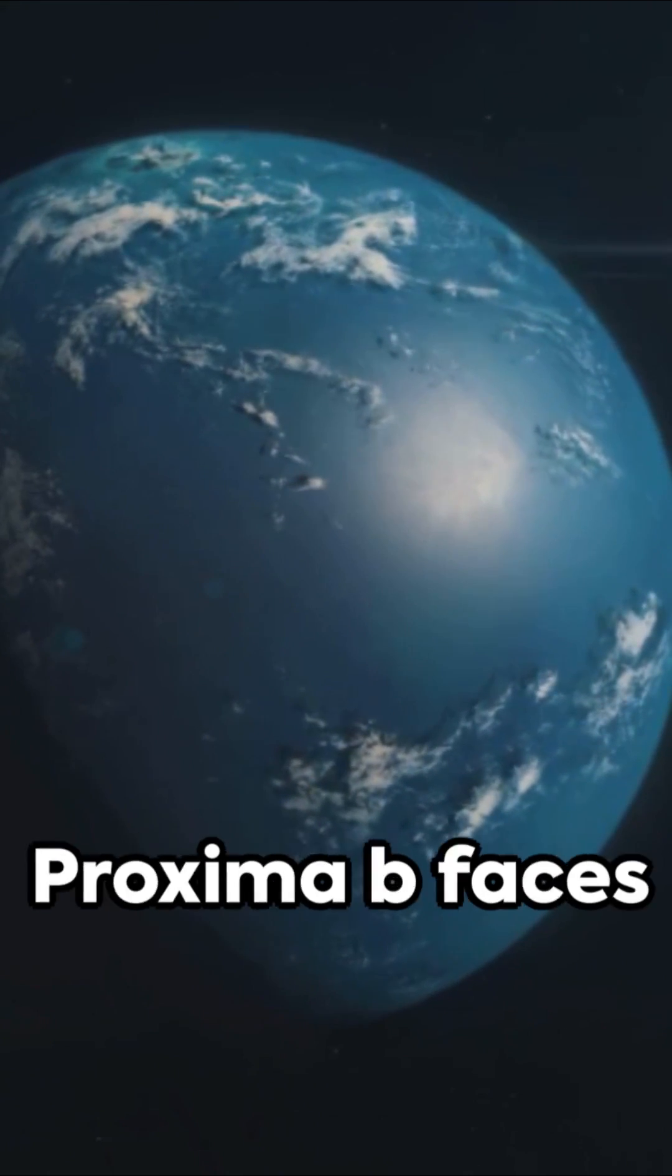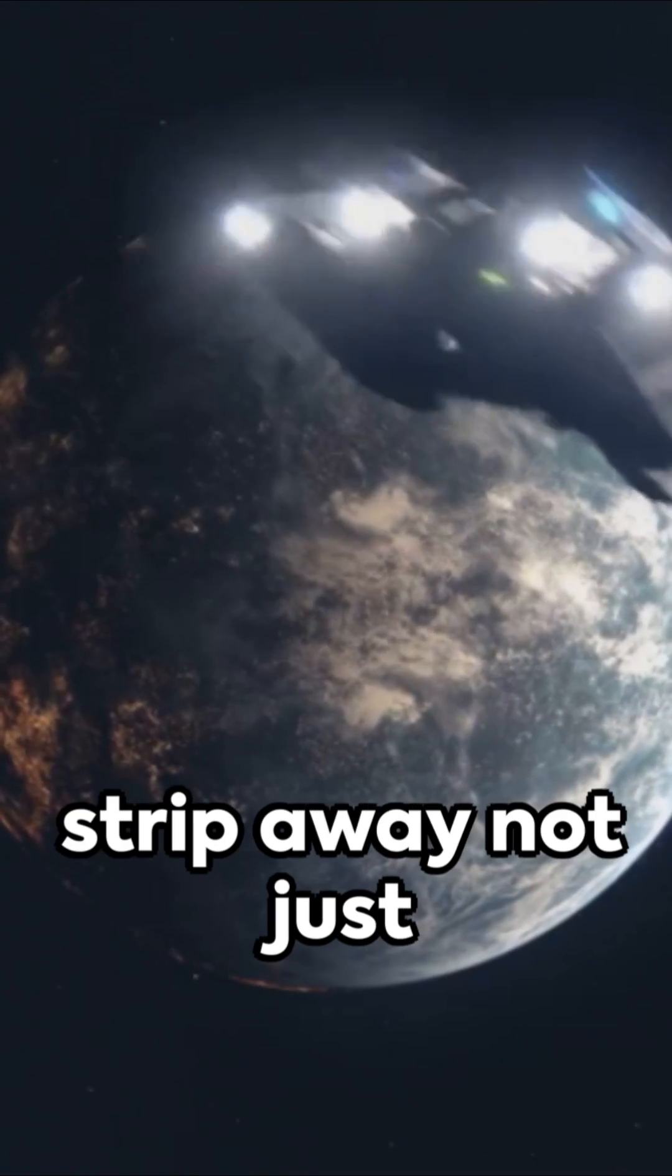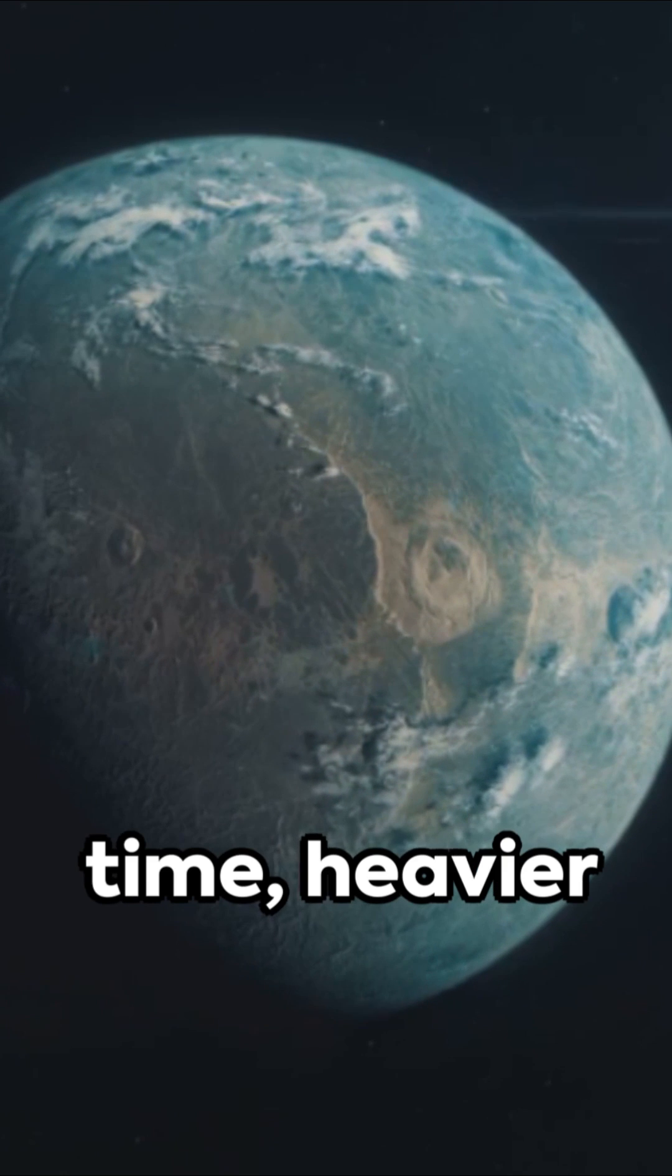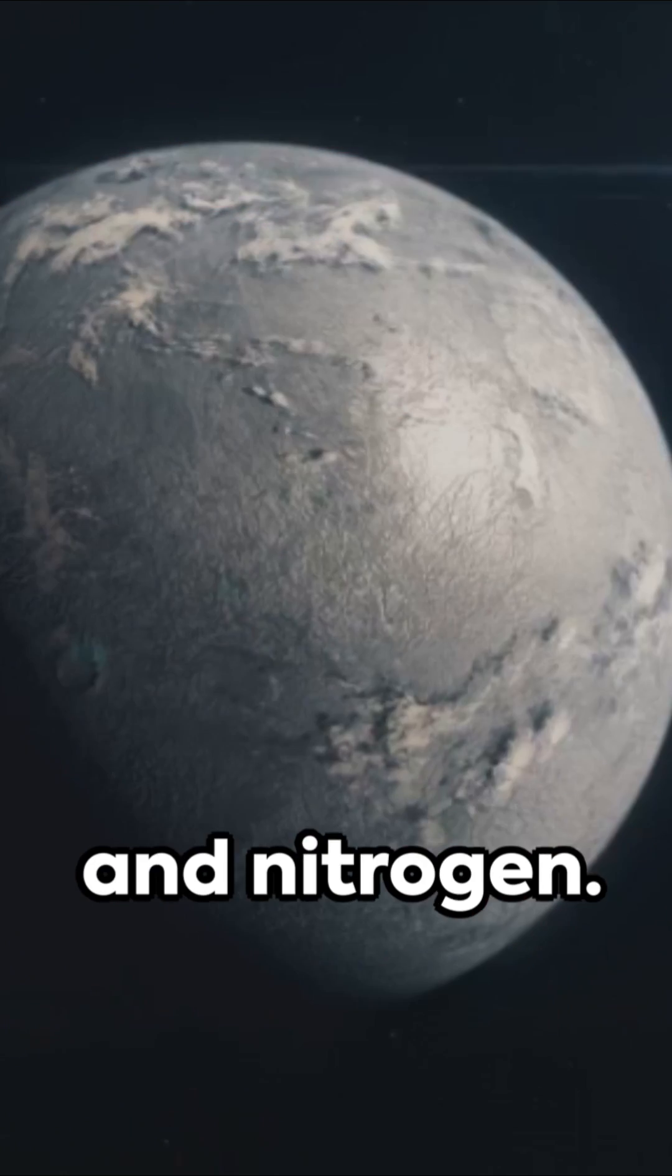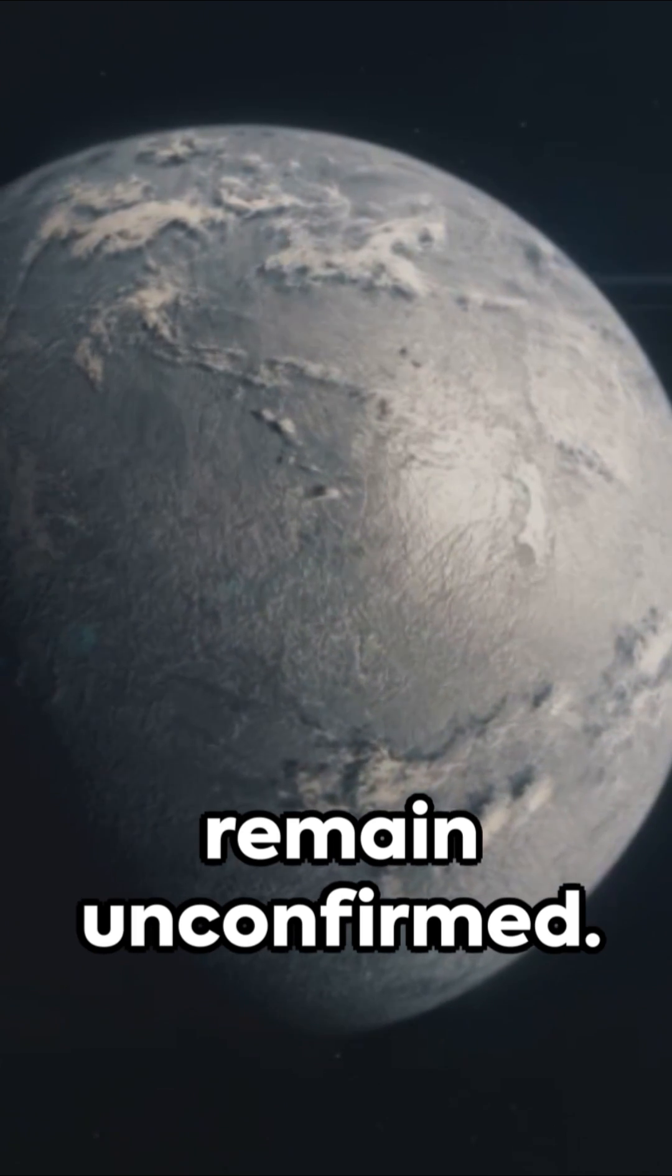Despite being in the habitable zone, Proxima b faces extreme ultraviolet radiation, enough to strip away not just hydrogen but over time, heavier elements like oxygen and nitrogen. The presence of water and a survivable atmosphere remain unconfirmed.